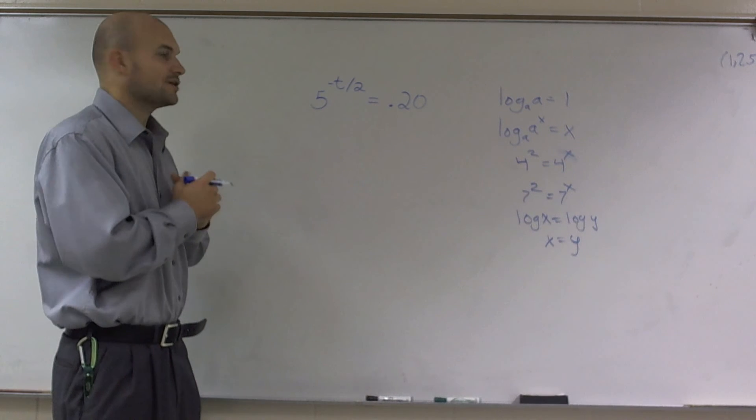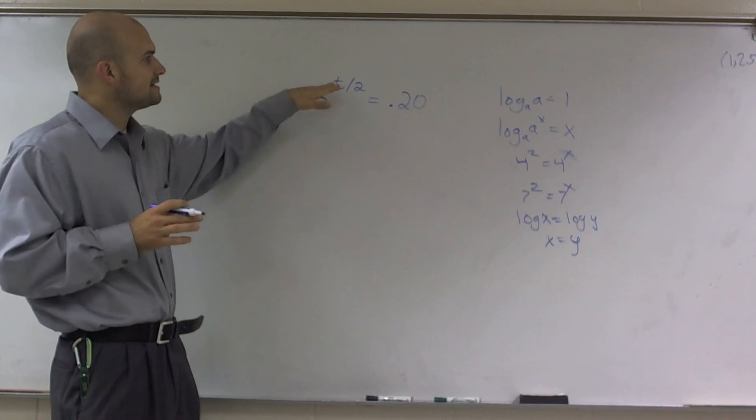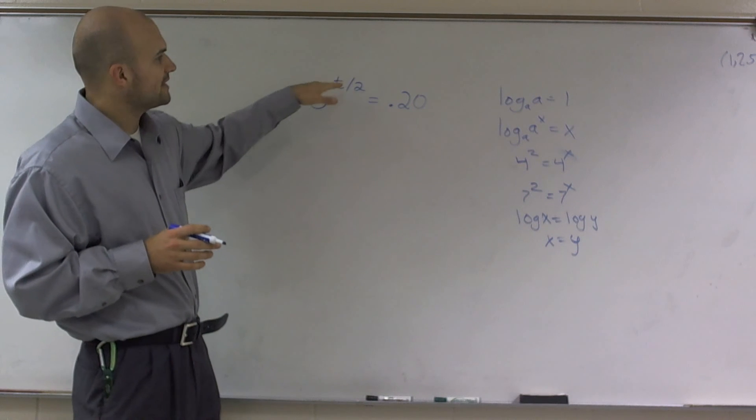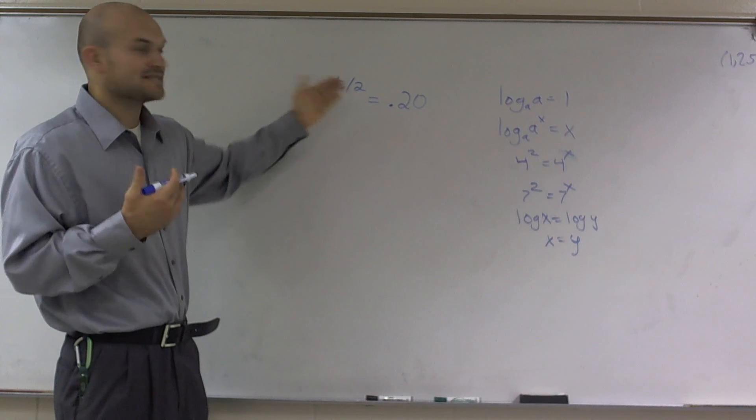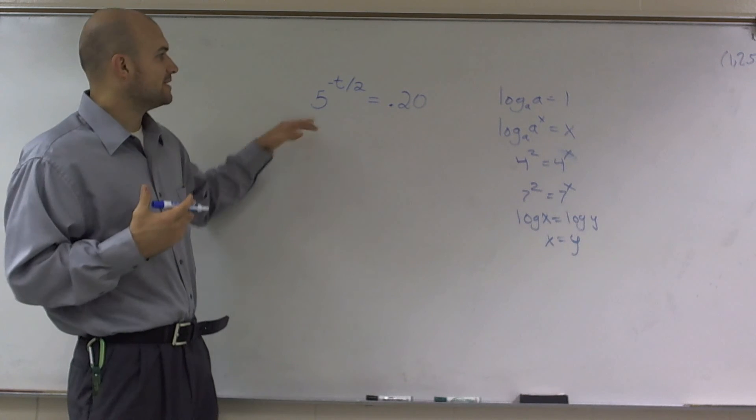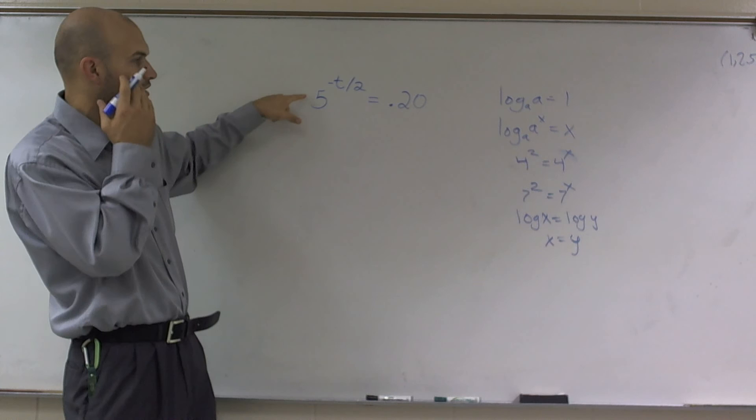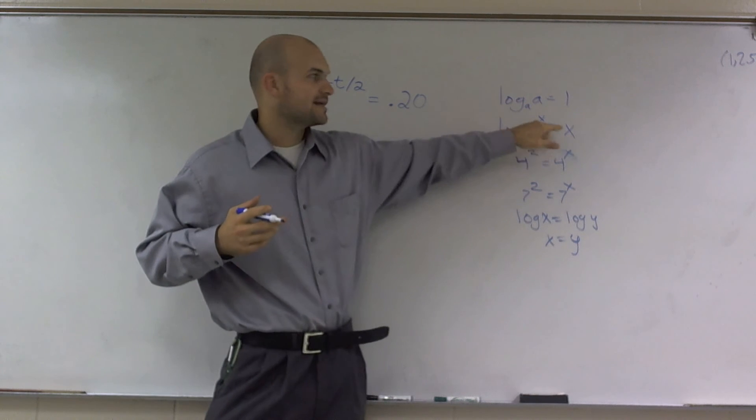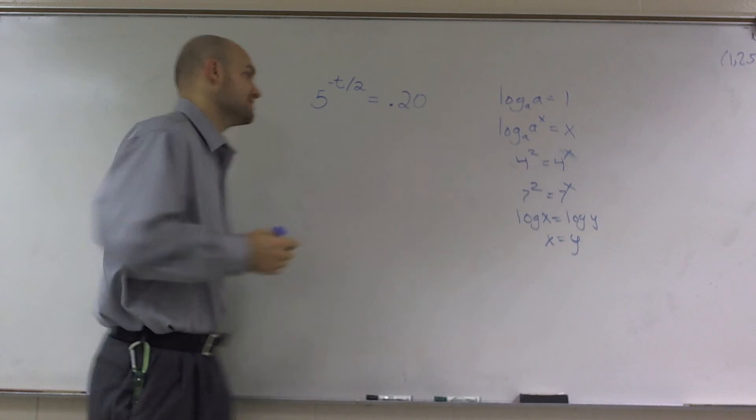So here, I need to look at this and I need to say, well, I need to get rid of this negative t raised to, or negative t divided by 2 as my exponent. I need to get rid of it. So what I know I can do is if I put this to the log base 5, then what I can do is I can essentially cancel that out and get my x point. So that's exactly what I'm going to do. I'm going to raise this and take the log of base 5 of 5.